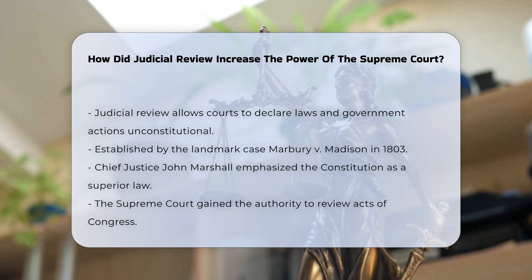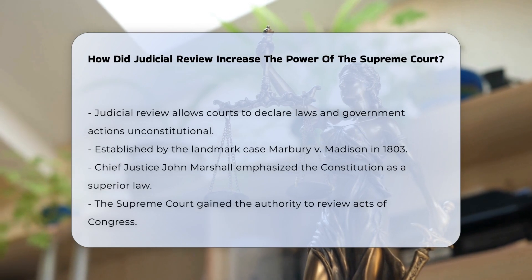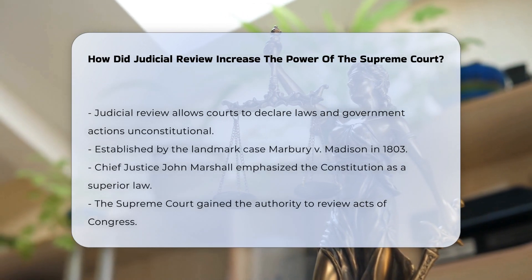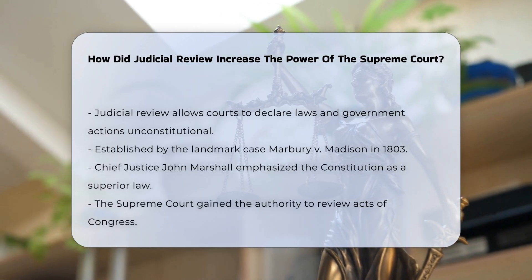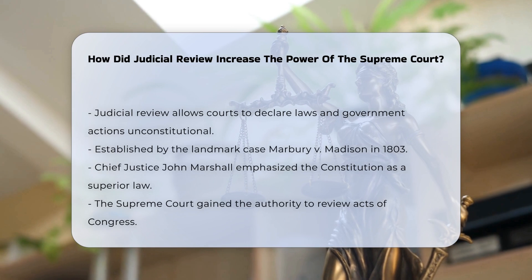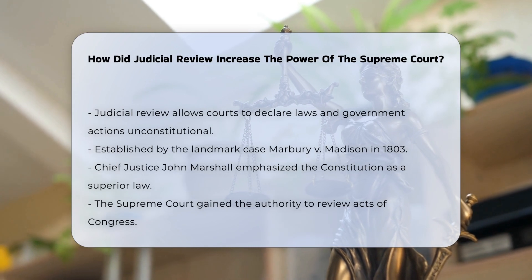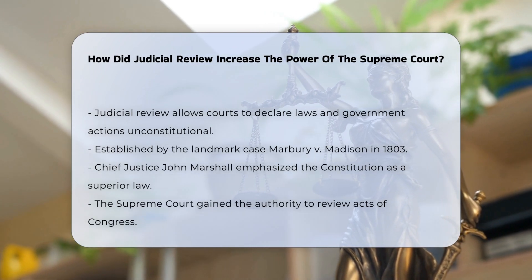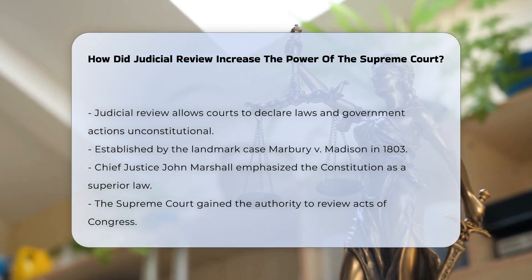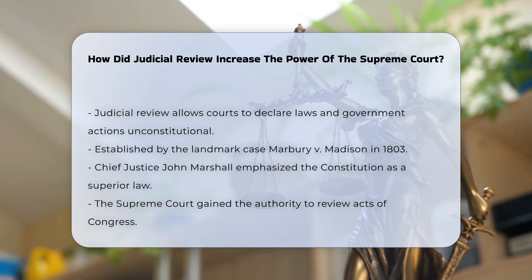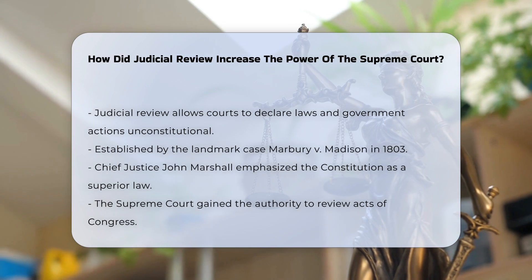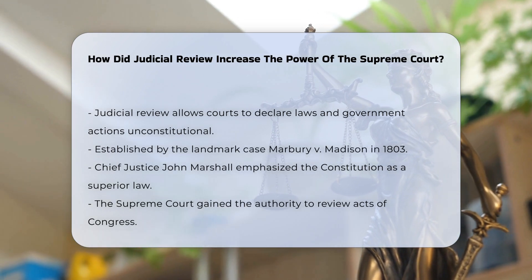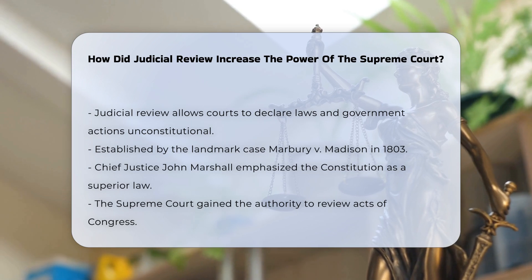Judicial review, the power of the courts to declare laws and government actions unconstitutional, was established by the landmark case Marbury v. Madison in 1803. This case marked a significant shift in the balance of power among the branches of the U.S. government.